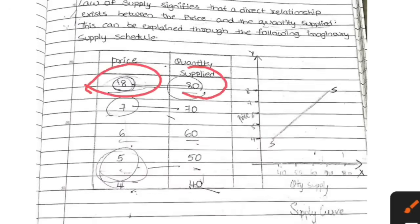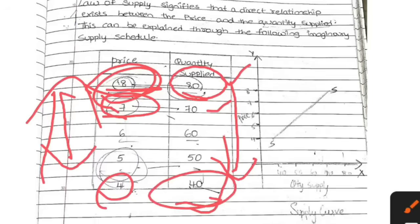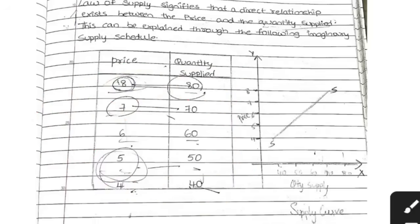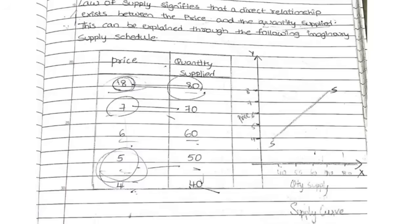The statement of the law: when price is more, quantity supplied is also more. When price is 8, supply is 80; when price is 7, supply is 70 — when price is decreasing, supply is also decreasing. When price increases from 4 to 8, customers also increase from 40 to 80. The law of supply always slopes from left to right in an upward direction. That is the table and graph — introduction, formula, statement, table, and graph.